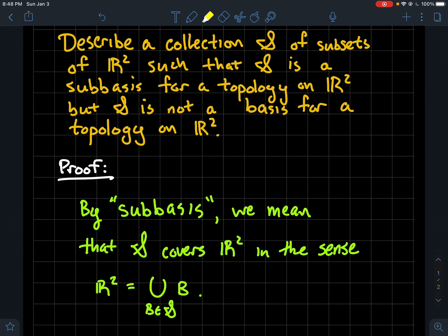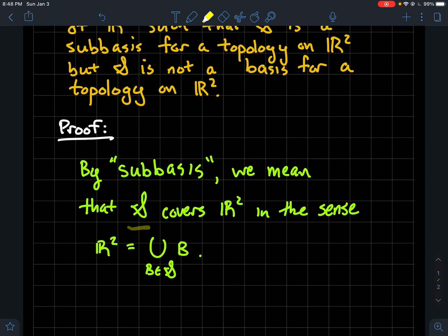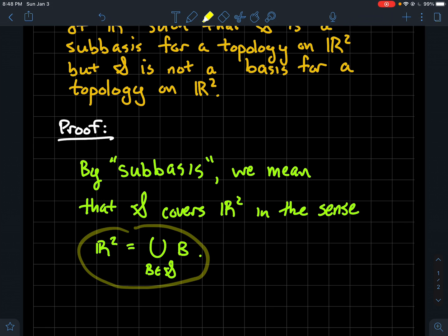There are a couple different definitions of sub-basis depending on the book. The one we're using here is: fancy S is a sub-basis if it covers R², meaning the union of all elements in S gives you back R².